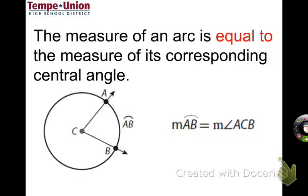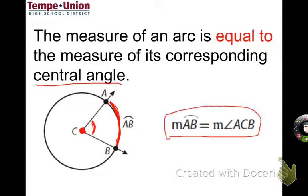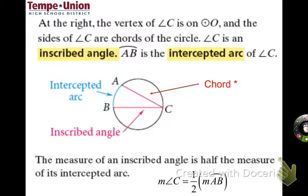The measure of an arc is equal to the measure of its corresponding central angle. A central angle has its vertex right at the center of the circle. With geometric symbols: the measure of arc AB equals the measure of angle ACB, where the middle letter is the vertex of the angle.